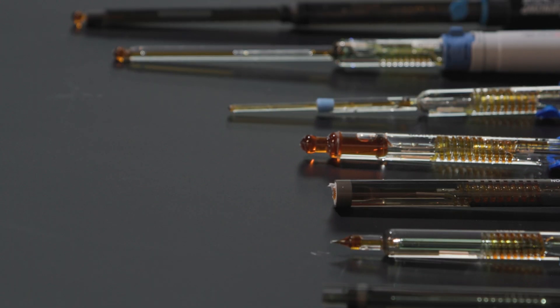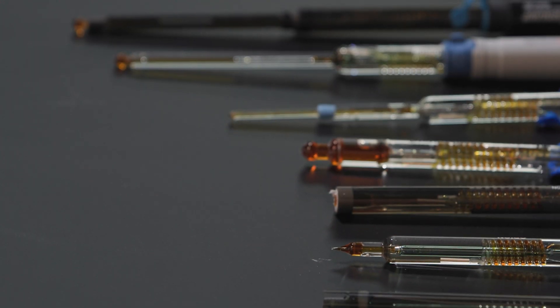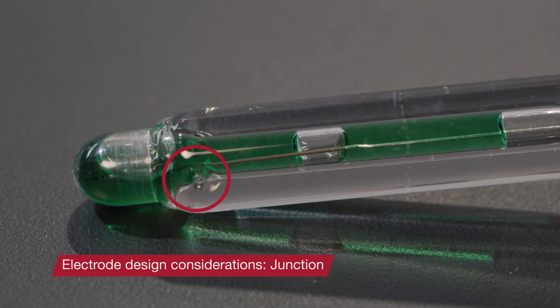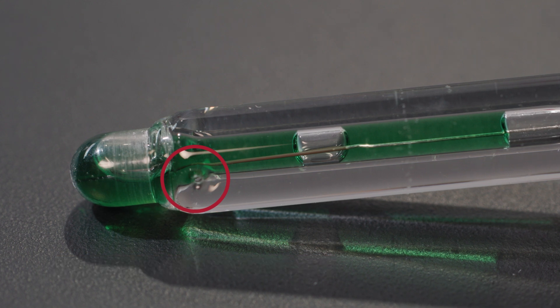Now it's time to investigate design. Not all electrodes are built the same. Differences in design are often a result of the electrode's expected use in a specific sample or application. One commonality is that all pH electrodes have a reference system. The part that makes contact with the sample is called the reference junction, and it can differ depending on the electrode design.